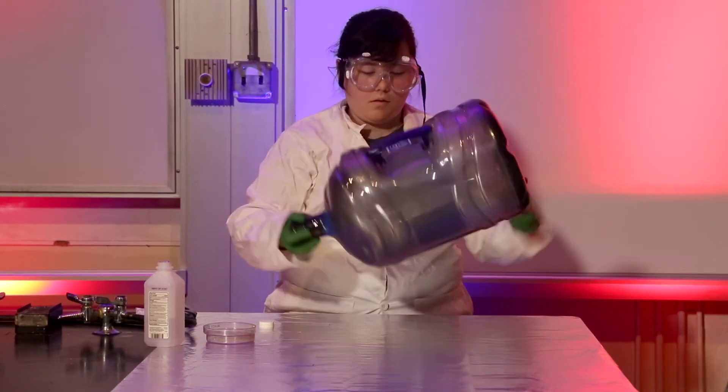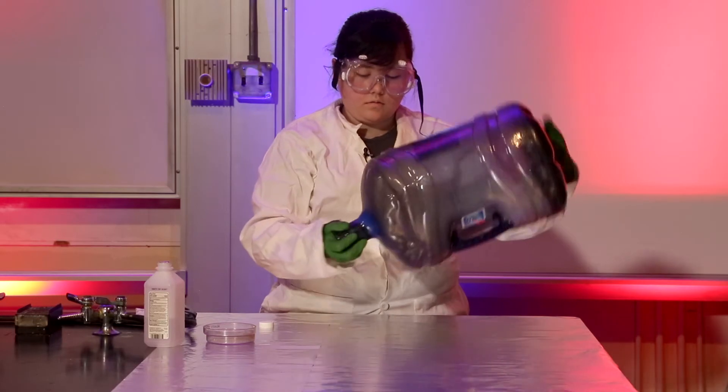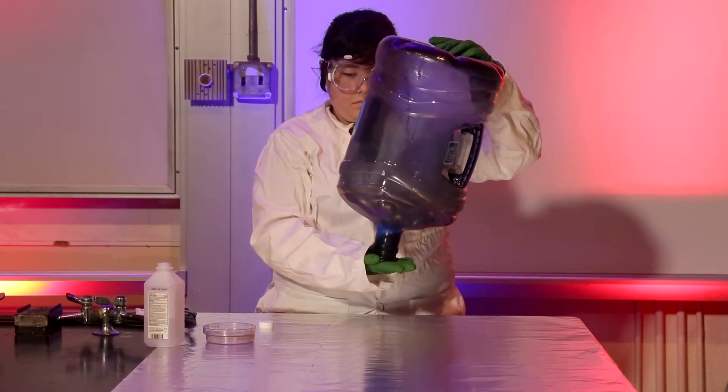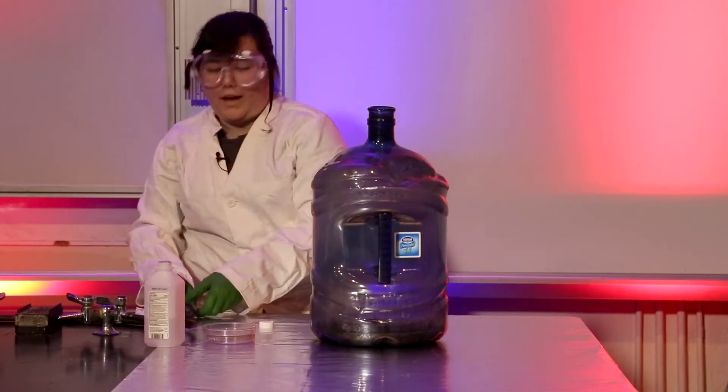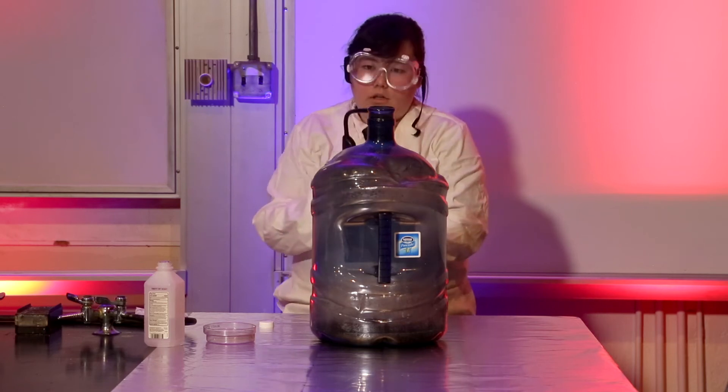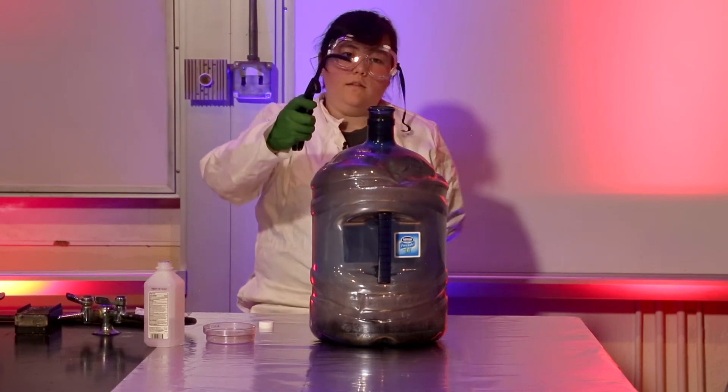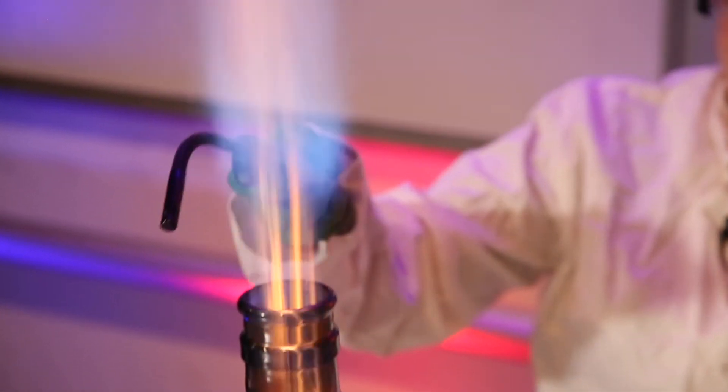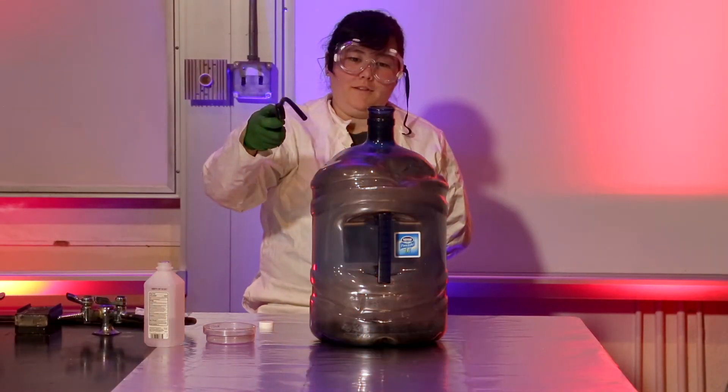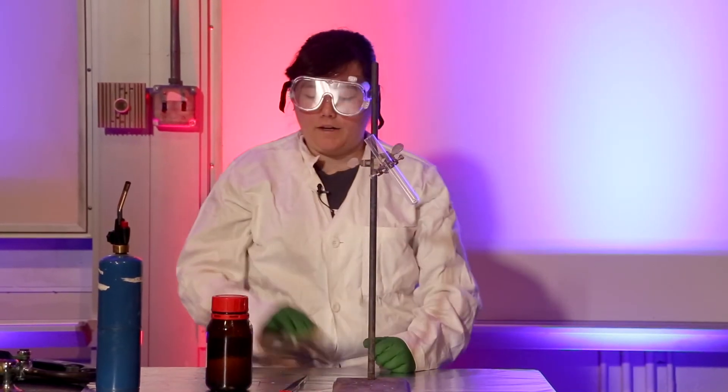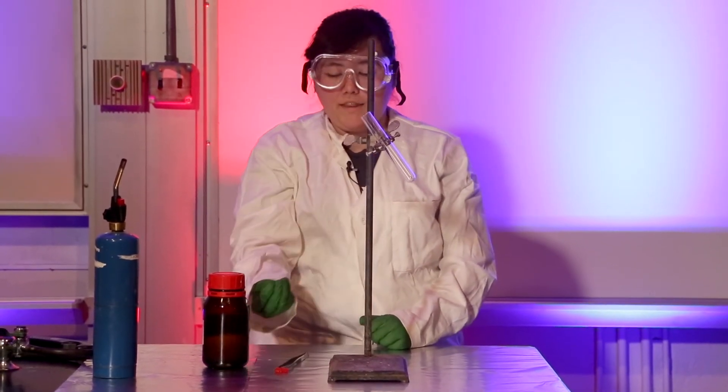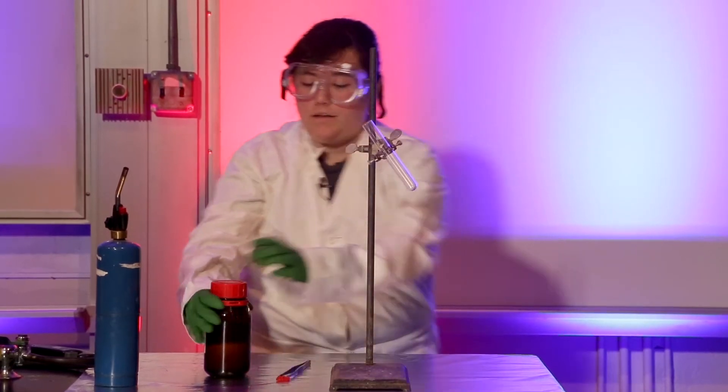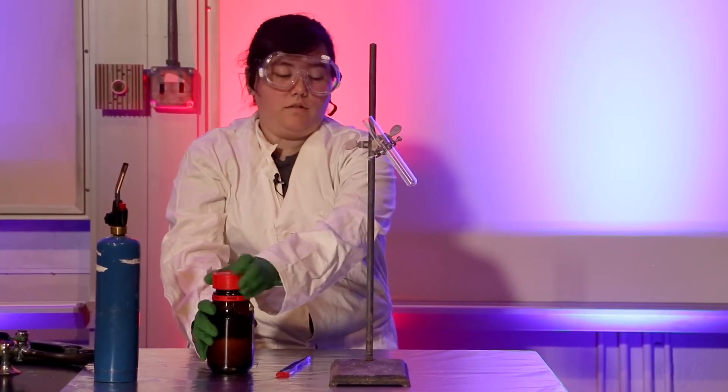Next up we have gummy bear torture chamber. Essentially what we're going to be doing here is heating up some potassium chlorate and dropping a gummy bear in it. The sugar within the gummy bear is going to react and make a really cool effect. First off, I'm going to add our potassium chlorate to our test tube here.